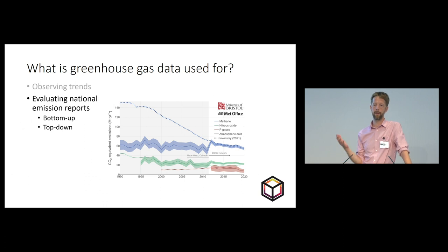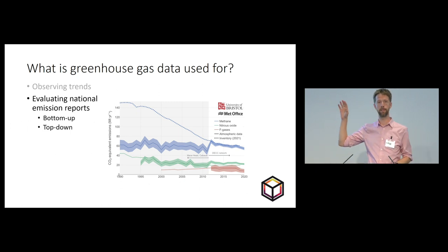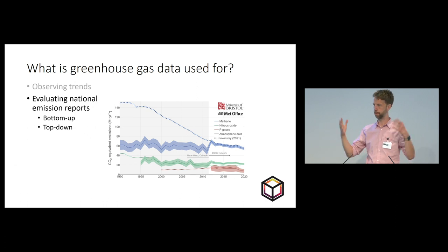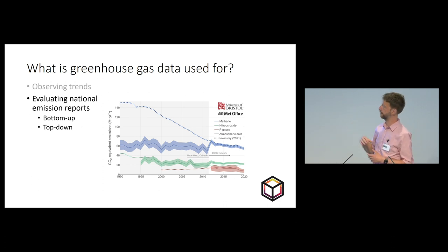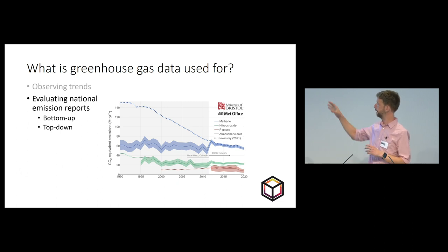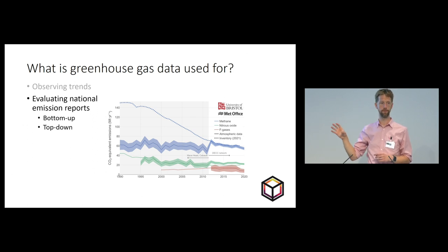We can also use various types of greenhouse gas data to try and understand national emissions. The dashed line in this figure shows the UK greenhouse gas emissions inventory, where the government tots up the amount of economic activity that produces greenhouse gas emissions — the number of cars on the road, the number of cows — and comes up with a national total. We can also estimate greenhouse gas emissions using atmospheric data, shown in the solid line. The UK has a greenhouse gas monitoring network called the DEC network, and we use this information routinely every year to evaluate the UK's greenhouse gas emissions inventory report that goes to the UN.